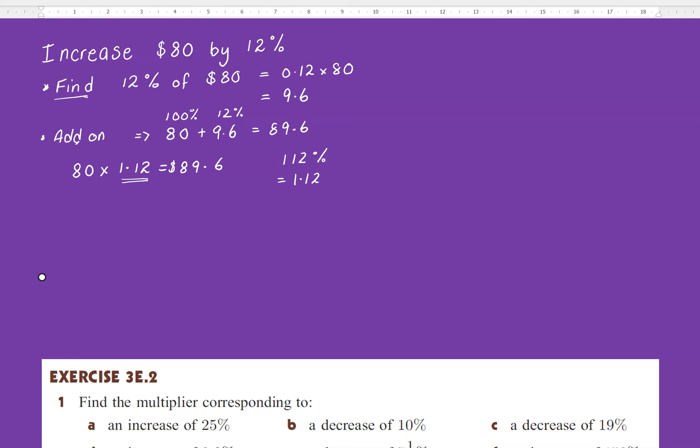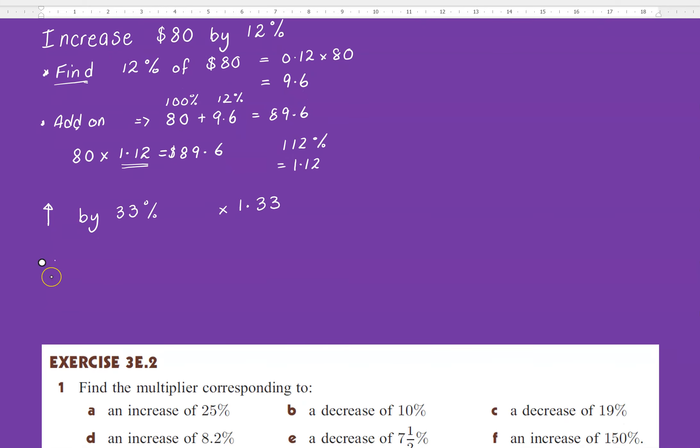So that's our multiplier, 1.12. And that works for everything. So if I want to increase something by 33%, my multiplier will be, so I times by 1.33. If I want to increase something by 56%, guess what? Yep, you're going to multiply by 1.56.